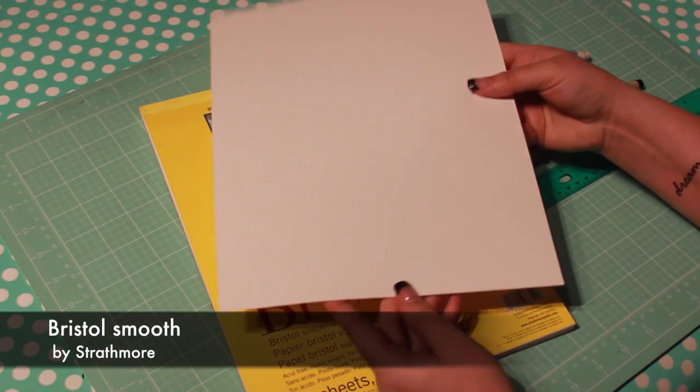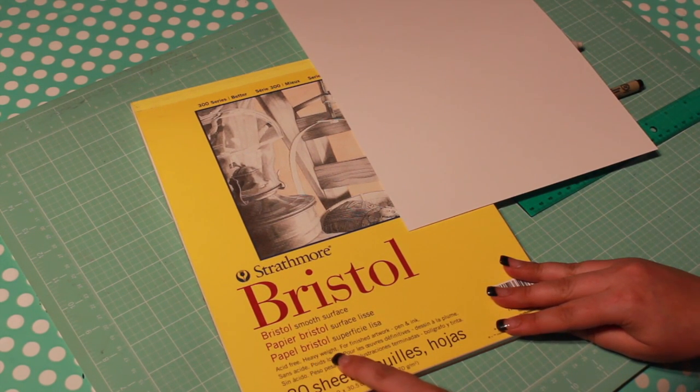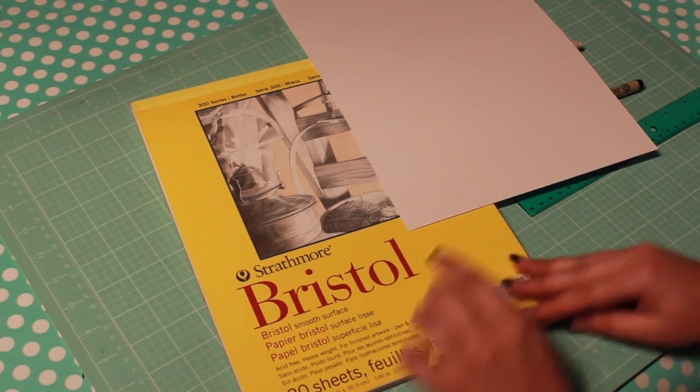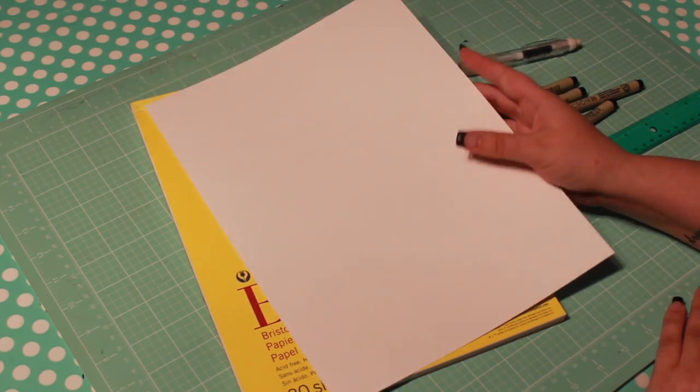The very best paper I found for lettering is Bristol paper made by Strathmore. This paper is incredibly smooth without being glossy. Its heavy weight holds up well to erasing and won't crumple. Bristol paper is acid-free, so your artwork will last for a long time.